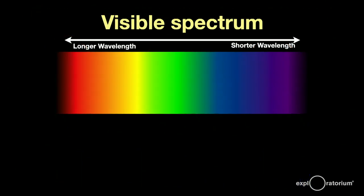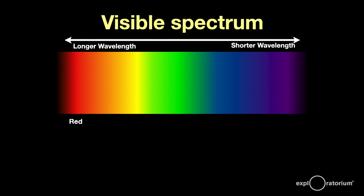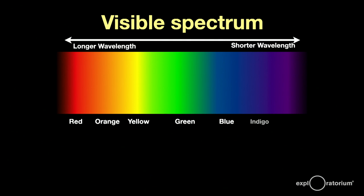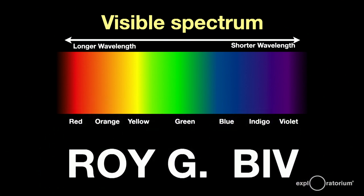Long wavelength visible light is red. As you shorten the wavelength, you proceed through the visible spectrum from red to orange, yellow, green, blue, indigo, and finally violet. The easy way to remember the colors in order is the name Roy G. Biv — an acronym for the colors.